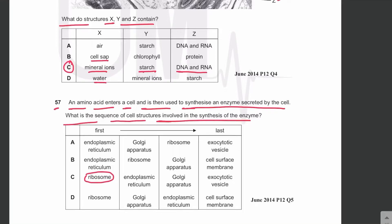At the ribosome, amino acids are joined to make a protein — this is translation. The protein then enters the rough endoplasmic reticulum where modifications occur. From the rough ER, proteins are packaged into vesicles that travel to the Golgi apparatus, where further modifications occur and Golgi vesicles are formed. These become exocytotic vesicles that fuse with the membrane, so the enzyme is made at the ribosome and enters the rough ER.